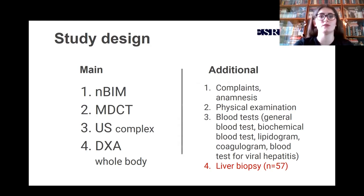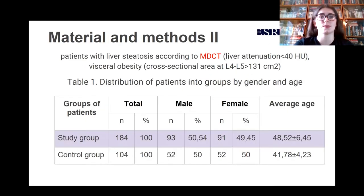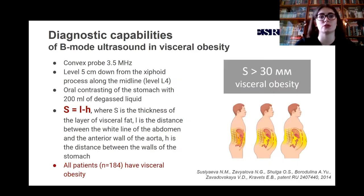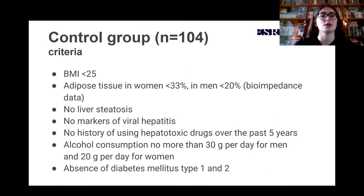Liver biopsy was performed in 57 patients. One hundred and eighty-four overweight patients with liver steatosis according to MDCT data were included. We also included patients with visceral obesity, which was determined using ultrasound in B-mode after oral contrasting of the stomach with degassed liquid. You can see the formula on the slide. One hundred and four patients were in the control group; inclusion criteria are also presented on the slide.